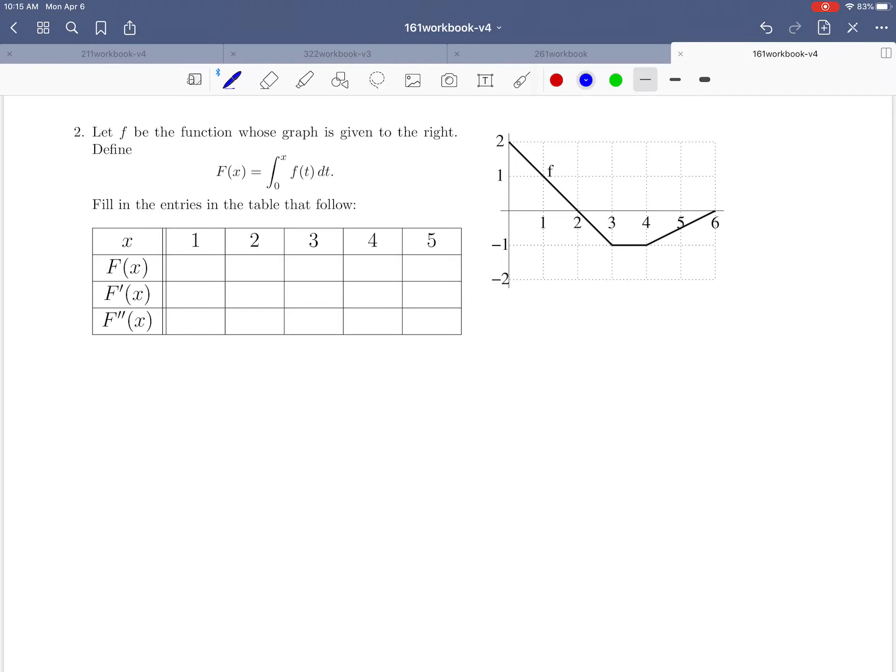Hello everybody, and welcome to exercise 2 on page 112 of the workbook. In this problem we're talking about two different functions, little f and capital F. Little f is the function whose graph is given to the right, and capital F is defined as an integral, the integral from 0 to x of f(t)dt. We're asked to fill out the table below.